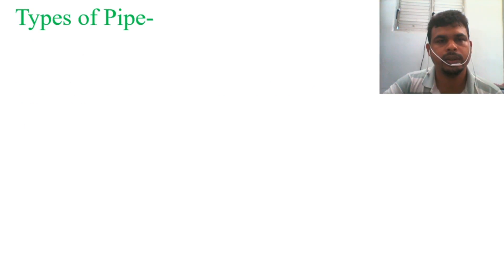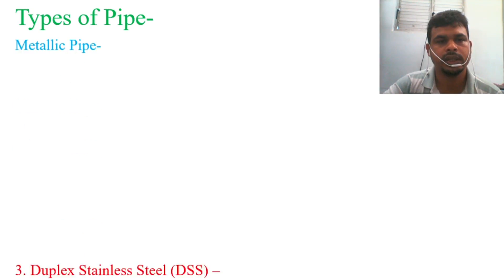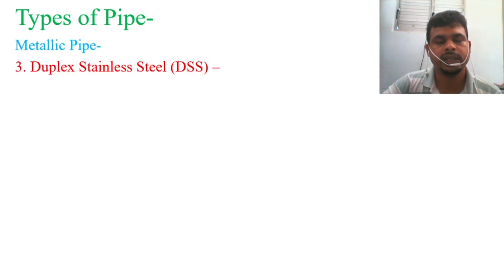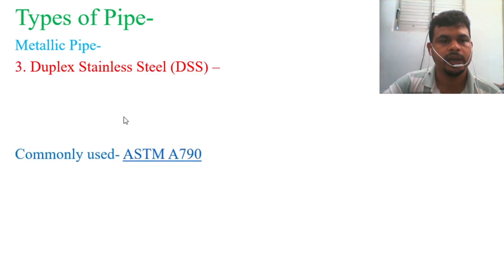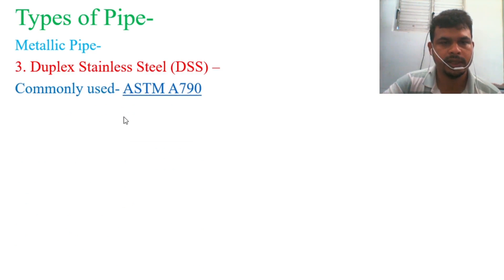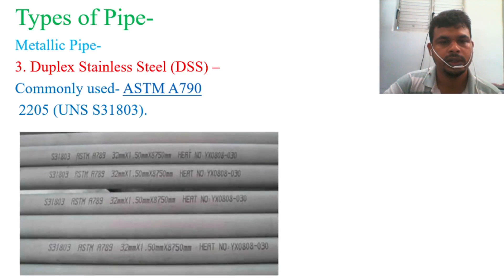Next is duplex stainless steel pipe, short form DSS. The commonly used grade is ASTM A790 2205 UNS S31803. In the photos, you can see the writing S31803 and ASTM A789. If you see this type of marking, you will be able to identify this as a DSS pipe.